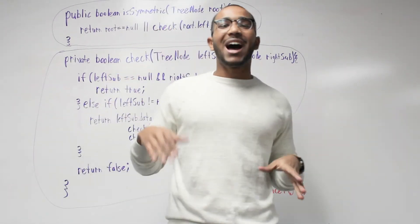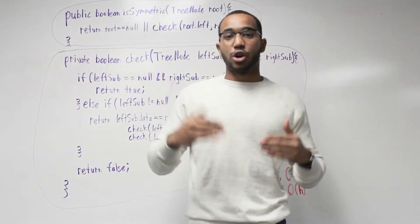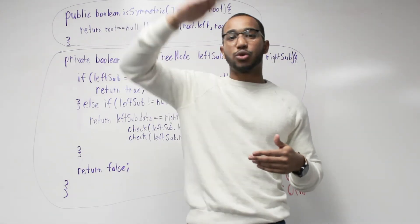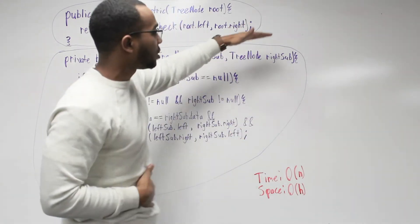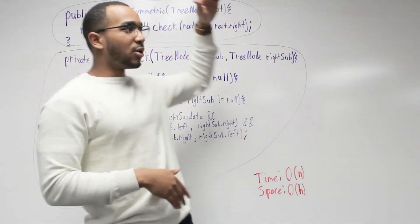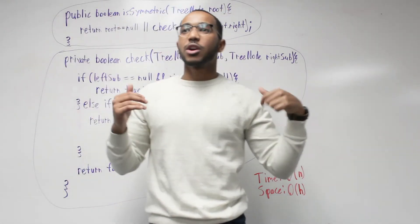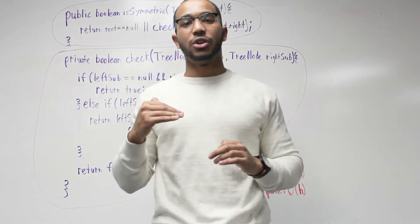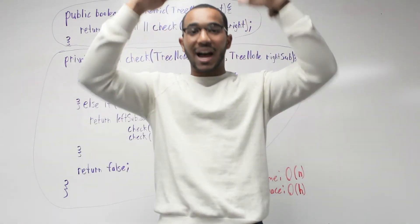Our space complexity, why is it O of h, O of our height? During our recursion, we are only going to keep up to the height of the tree. Our call stack is only going to have as many calls as tall as the tree. When we're going down, the amount of space we use on the call stack is not proportional to the amount of nodes. It's proportional to the height of the tree because we're doing a depth traversal.